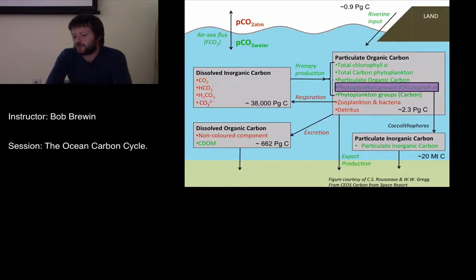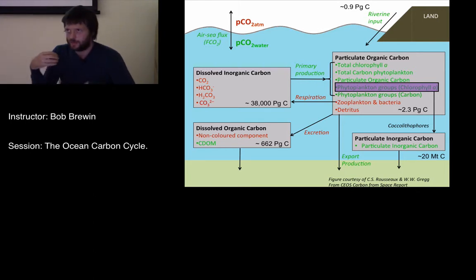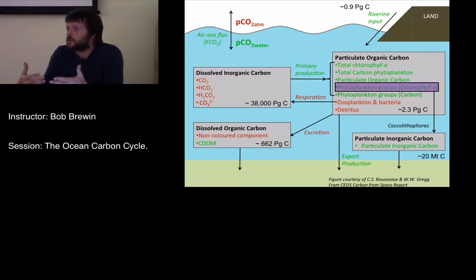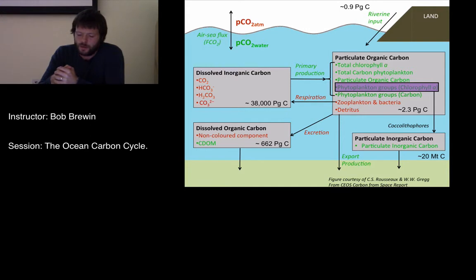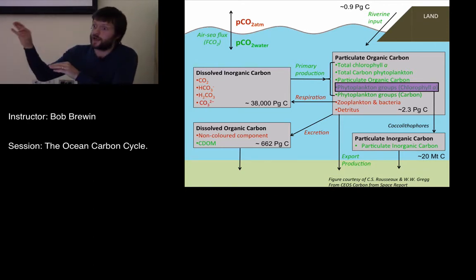Moving now onto phytoplankton groups. Getting information on phytoplankton groups is quite interesting because it can tell us about what happens to the carbon. For instance, if the phytoplankton community consists of very large cells, those large cells are typically thought to sink quite rapidly depending on their density, and may contribute far more to export production than very small cells. This kind of information can be used to improve our understanding of how particulate organic carbon cycles.